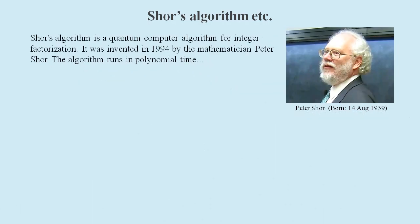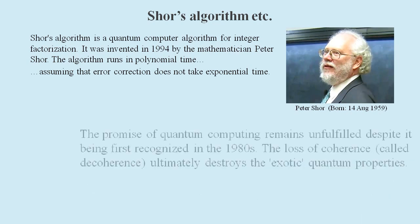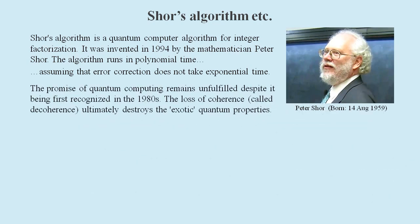But what about the performance of algorithms that claim to make use of entanglement? Take Shor's algorithm, for example, which is used for integer factorization. It is supposed to run in polynomial time, which means it should be fast, unless the error correction takes exponential time, which could make it slow and no better or possibly worse than a classical computer. The promised superiority of quantum computing remains unproven.